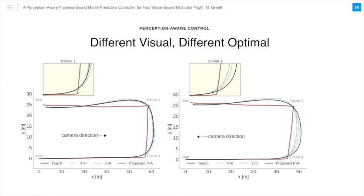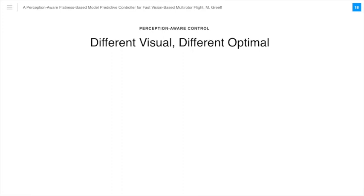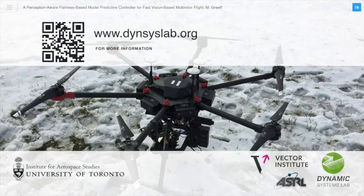By pointing the camera in different directions, our perception-aware approach doesn't repeat the path in the same way. In these plots, we show the teach path in red, the simulated optimal path under model predictive control with a 4 meter fixed path error constraint in green, a 3 meter fixed path error constraint in blue, and our perception-aware constraint in black. In looking toward the road or case 2, we can actually afford a larger path error around corner 1 in order to prioritize speed while still guaranteeing localization. So, to summarize, building perception awareness, as we have in the presented work, allows us to exploit the fact that a different visual environment results in a different optimal fast flight.